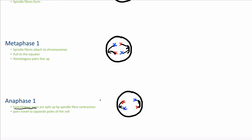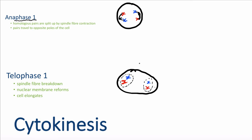In telophase 1, three things happen. The chromosomes reach the poles of the cell, so chromosome 7 from mom and chromosome 7 from dad are now in opposite parts of the cell. The nuclear membrane starts to reform around these separated homologous pairs. The spindle fibers begin to break down. Finally, there is a period of cell elongation to prepare for cytokinesis — the cell gets longer so it can divide.